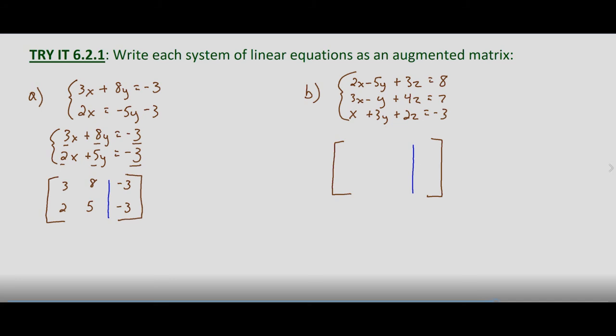And what they equal, the constant, goes on the right. So 2, negative 5, 3, 8, 3, negative 1, 4, 7, 1, 3, 2, negative 3.